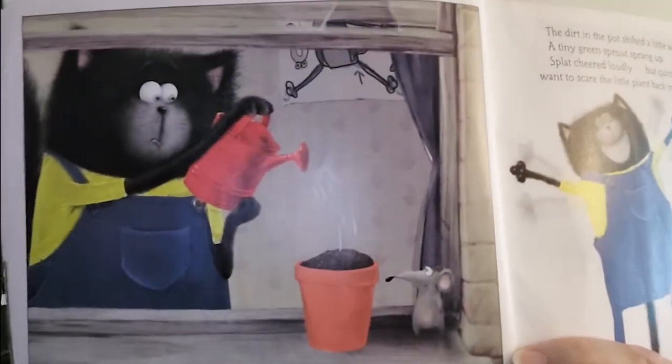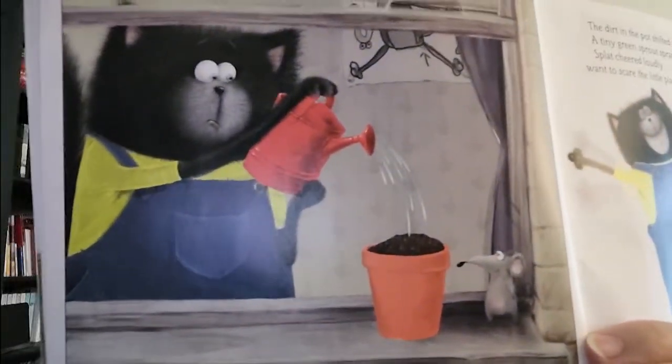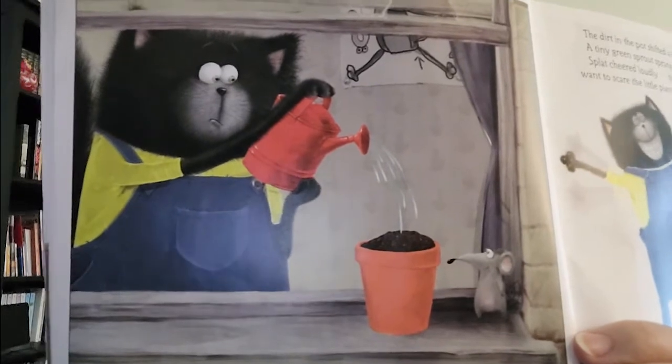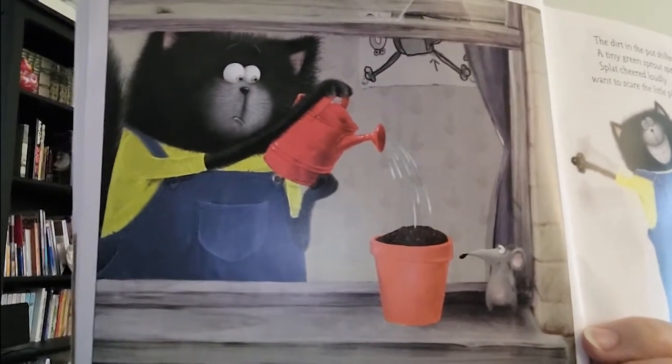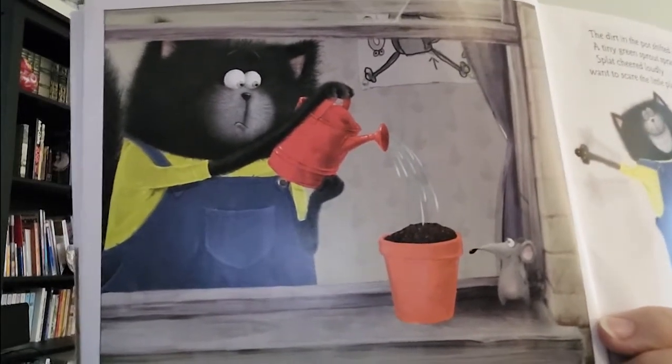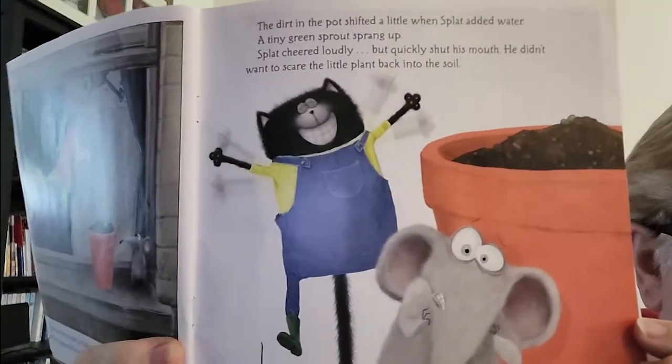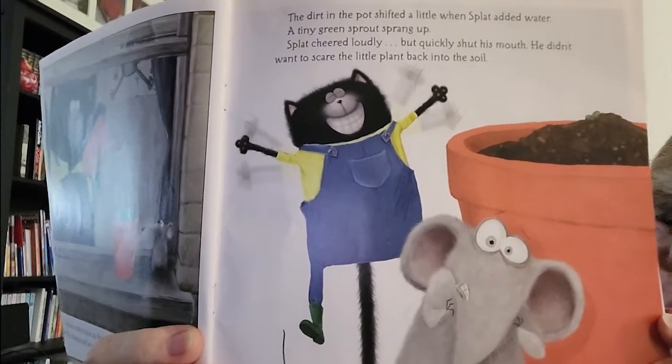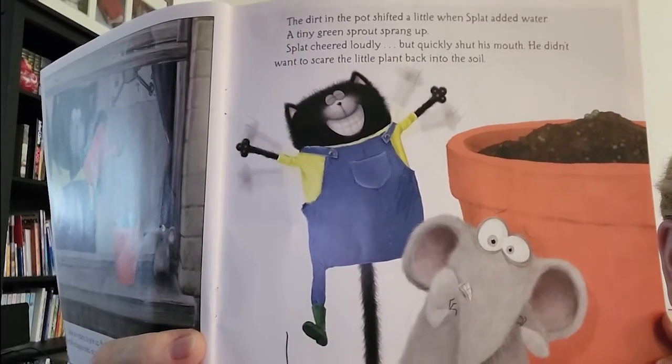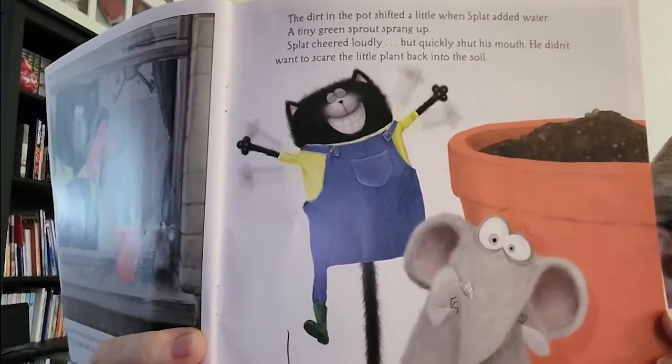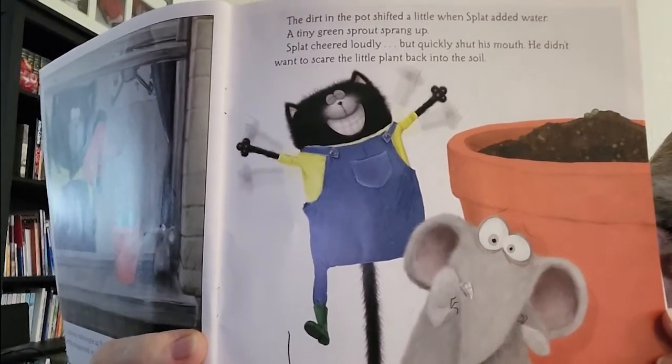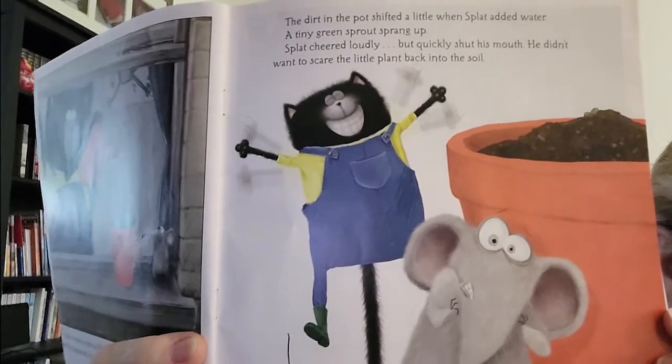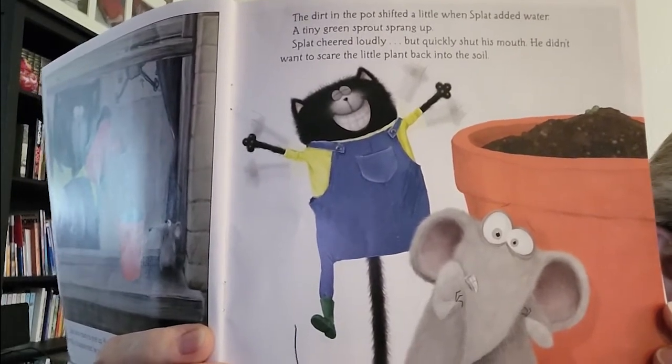Splat was ready to give up. Maybe the seed would never sprout. Feeling terribly disappointed, he watered it one last time, just in case. The dirt in the pot shifted a little when Splat added water. A tiny green sprout sprang up. Splat cheered loudly, but quickly shut his mouth. He didn't want to scare the little plant back into the soil.